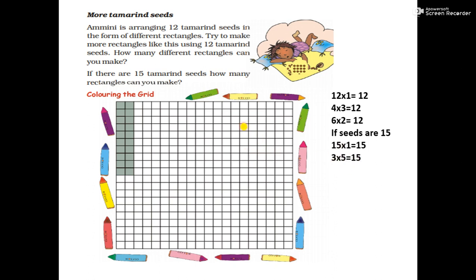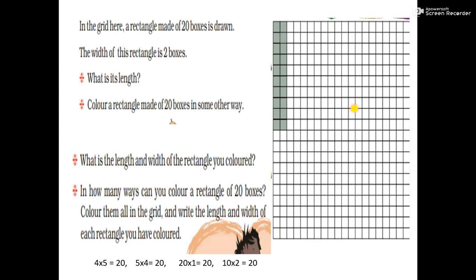Okay children, if the seeds are 15, then you can make a rectangle using 3 boxes of width and 5 boxes of length, or 5 boxes of width and 3 boxes of length. If the seeds are 12, you can make rectangles in a similar way. In the grid here, a rectangle made of 20 boxes is drawn.